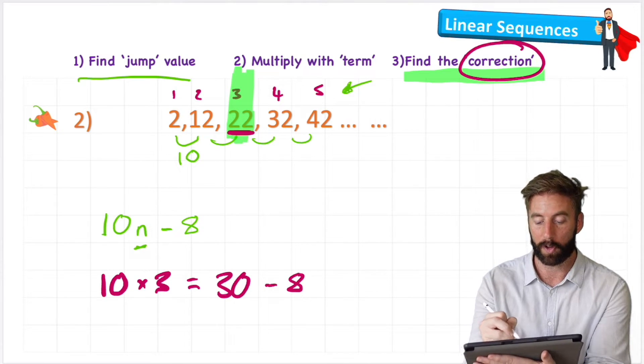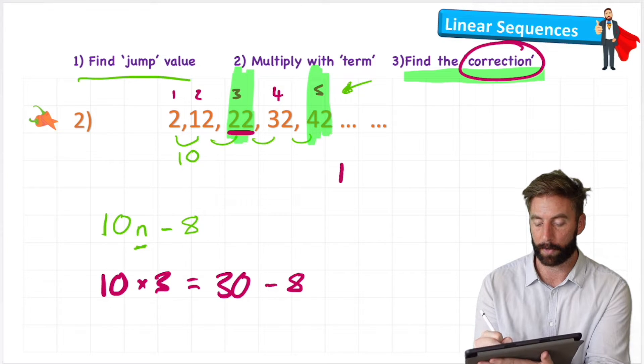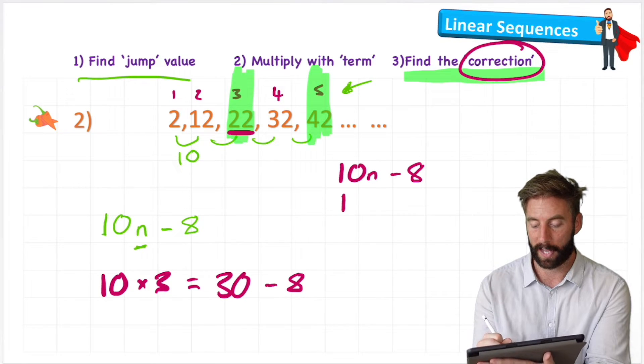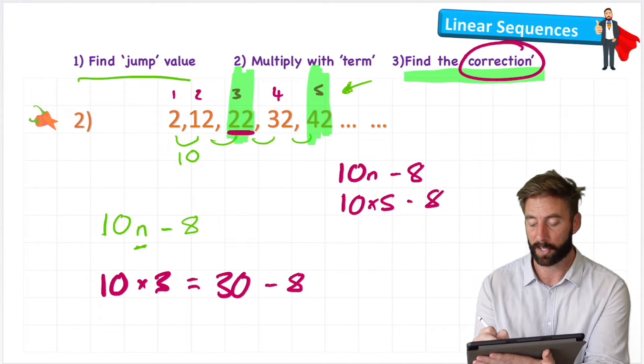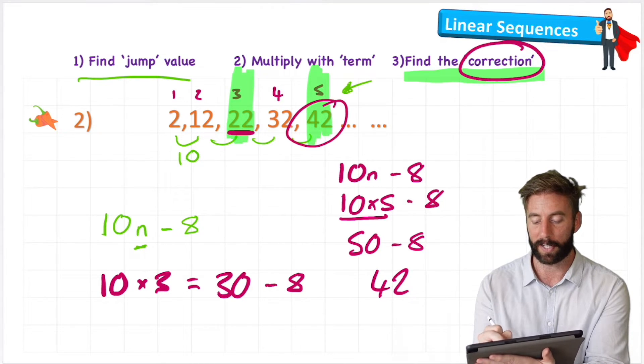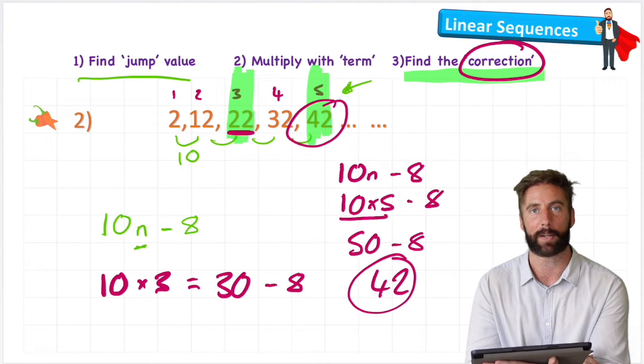Let's check it with another one that we've got. Let's check it against the fifth term. So let's start by writing our formula, 10n minus 8. And this time we're going to be looking for the fifth term. So it's 10 times 5 minus 8. BODMAS tells me to do the multiplication first. 10 times 5 is 50, minus 8 is 42, which is the correct number. And again, I can use this formula for any number now in this sequence.